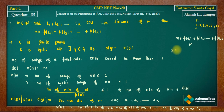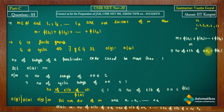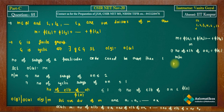This means for each positive divisor a of m, the number of elements of order a is exactly φ(a). In particular, taking a = m (since m divides m), the number of elements of order m is exactly φ(m).